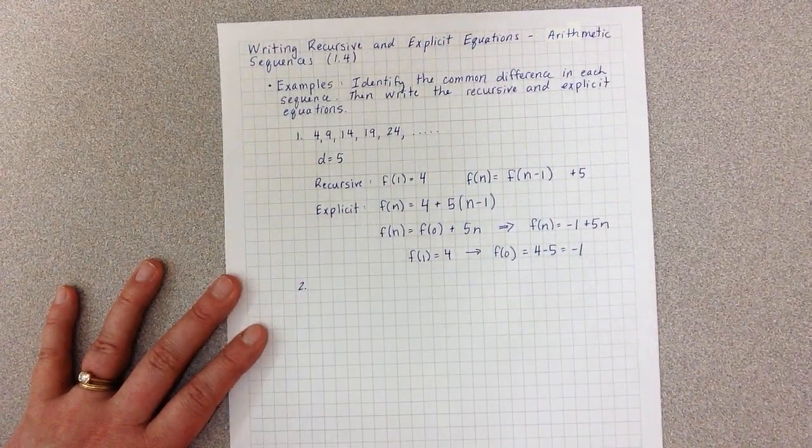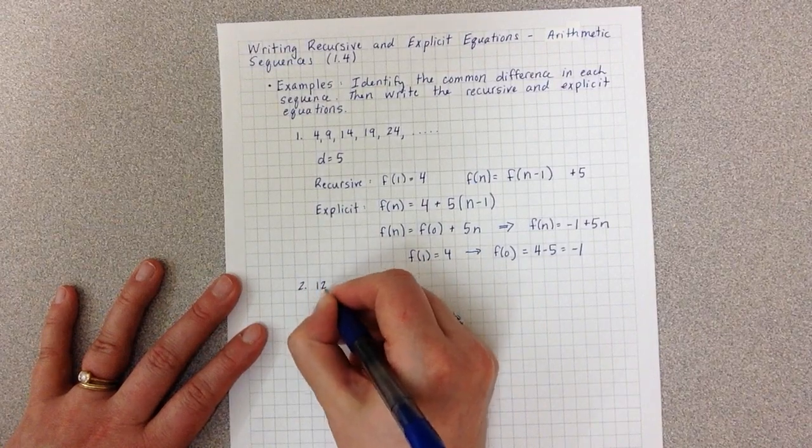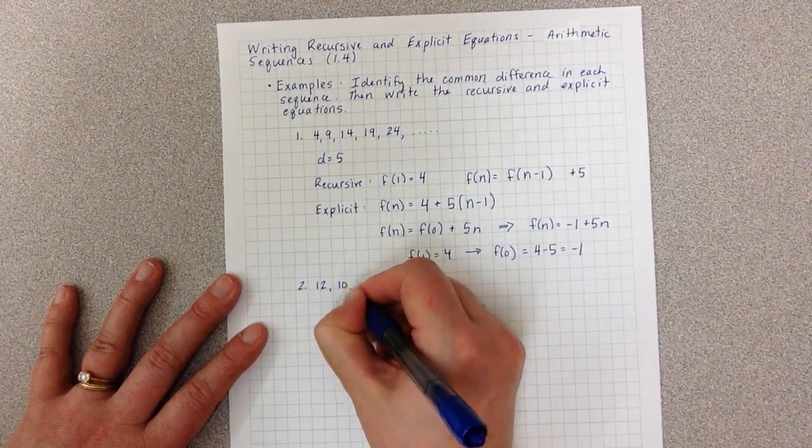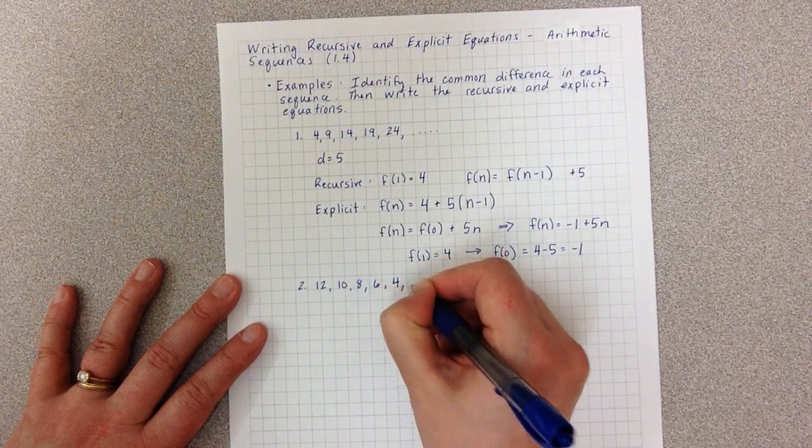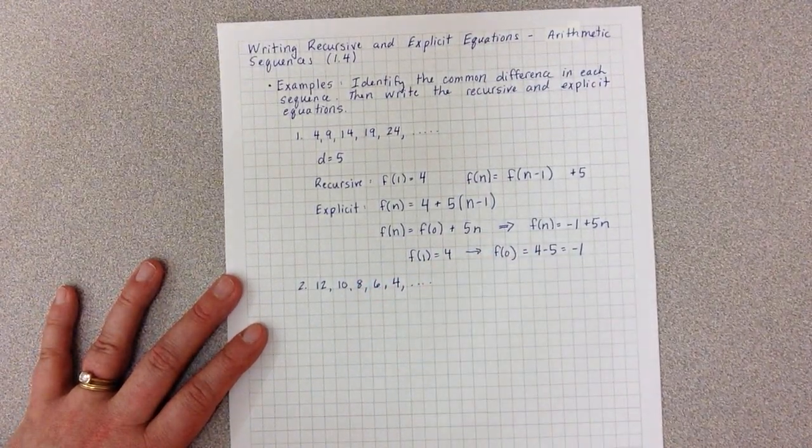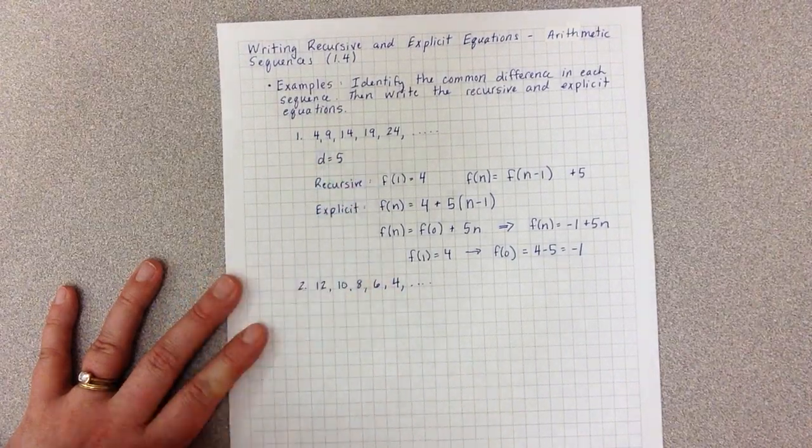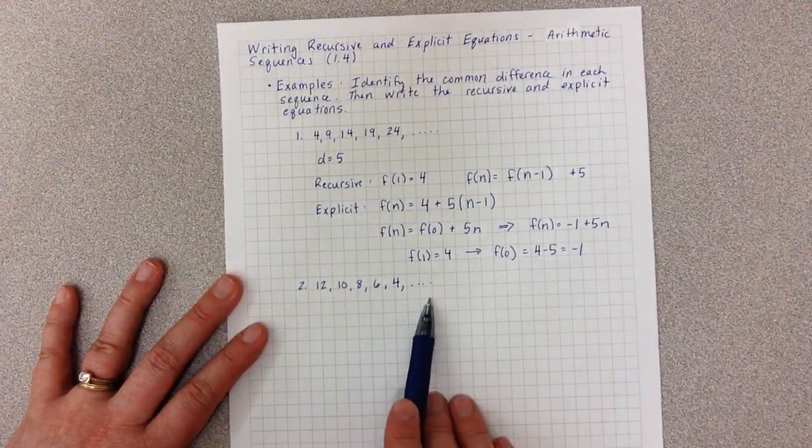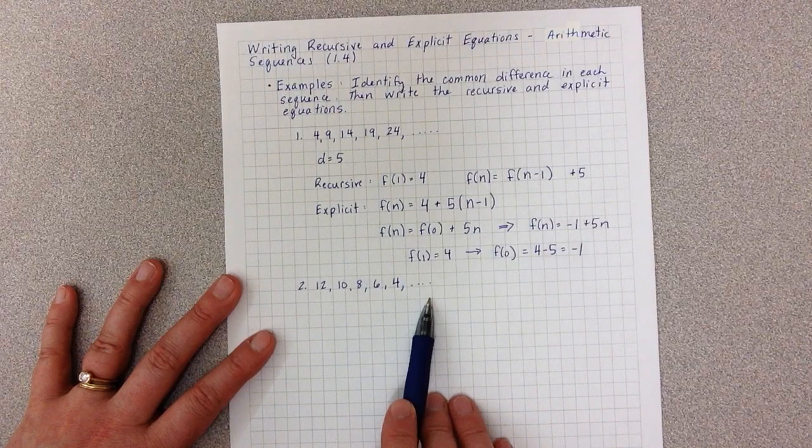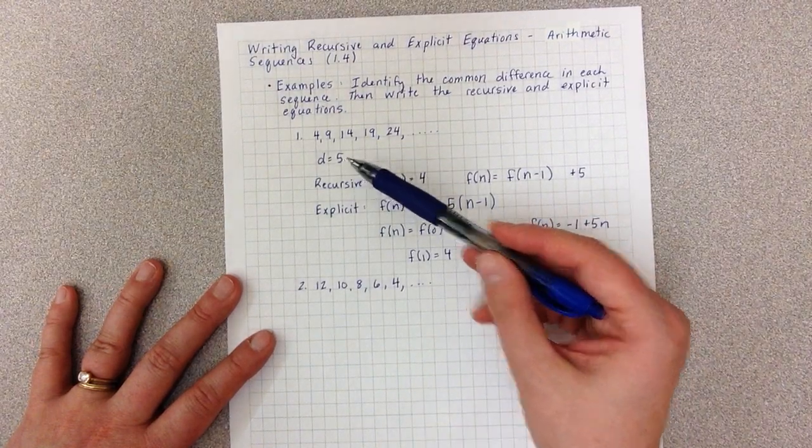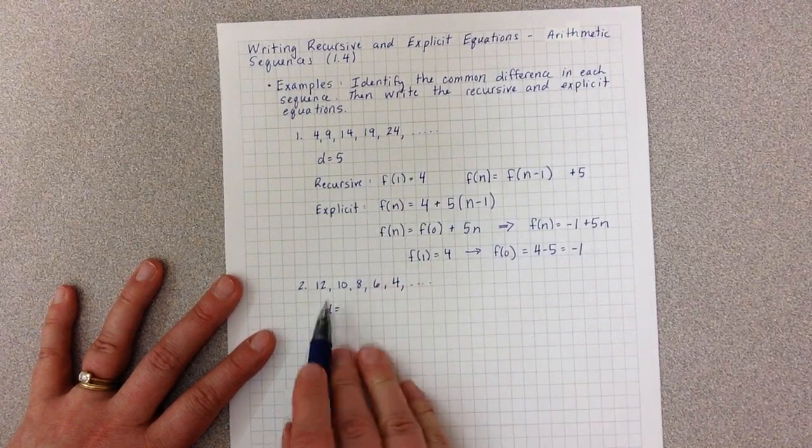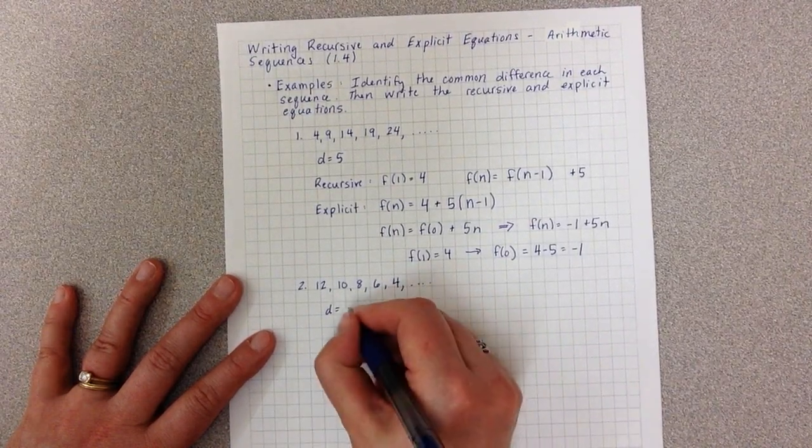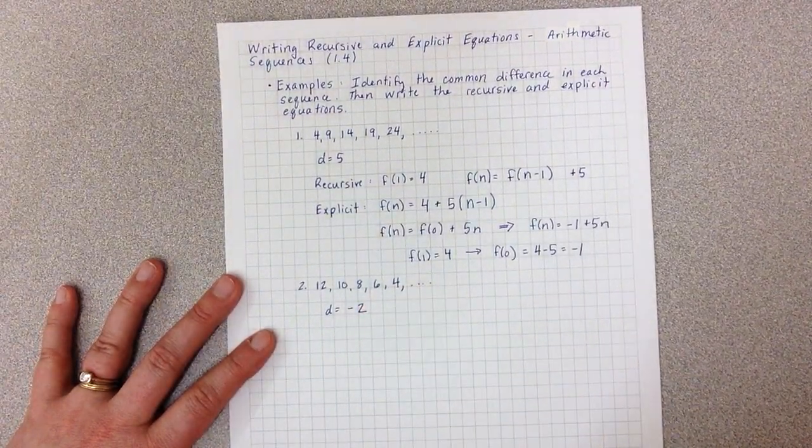Example two. We have the sequence 12, 10, 8, 6, 4, etc. In this case, unlike example one where I'm adding something each time, this time I'm subtracting something each time. But remember, our D value has to be what we're adding. So subtracting two is the same as adding by negative two.